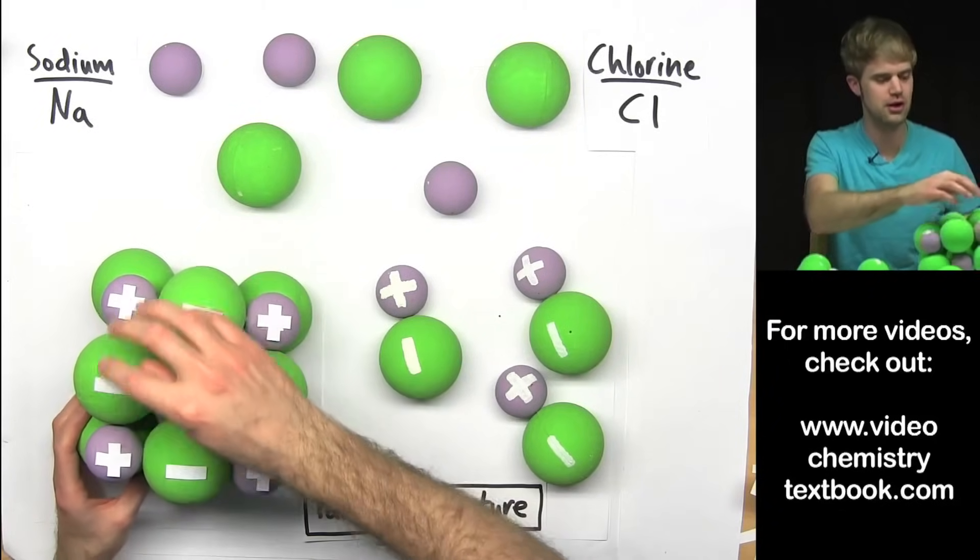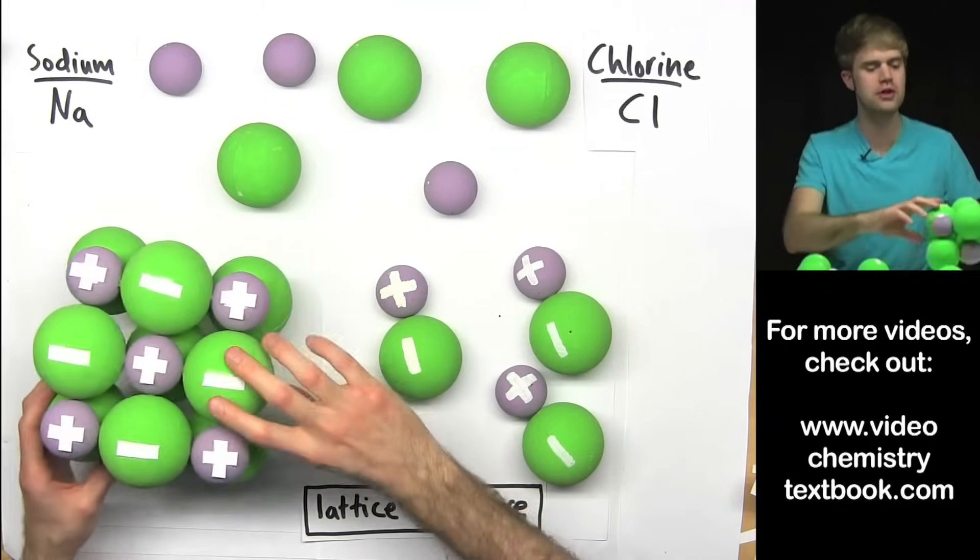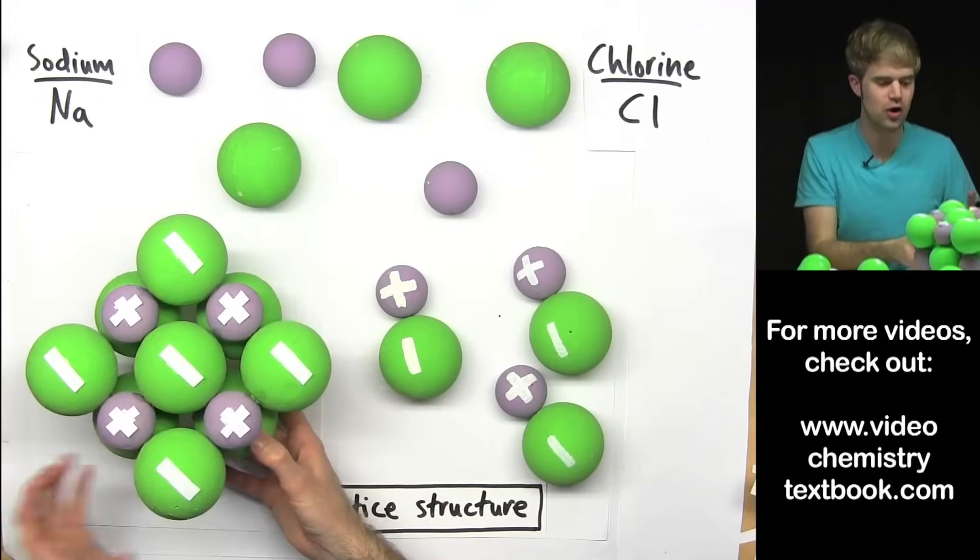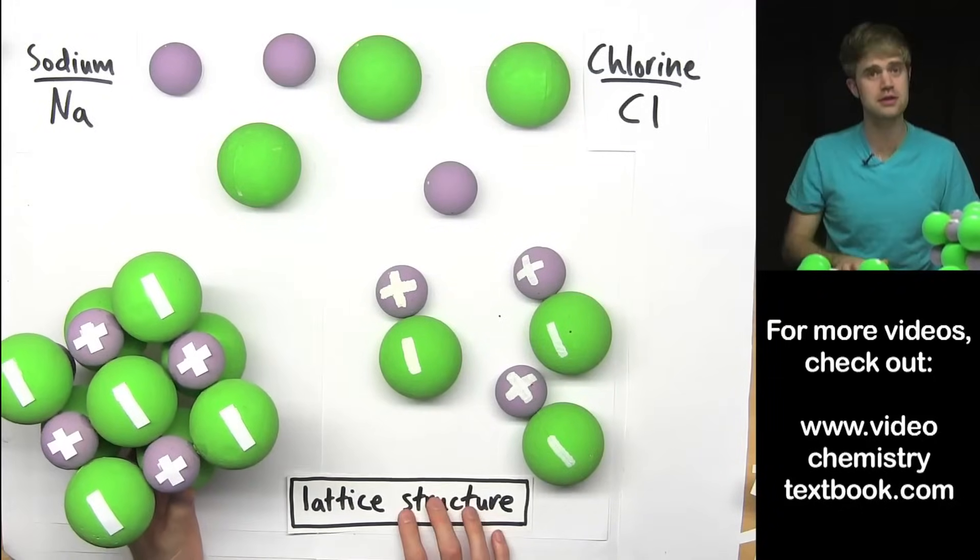Plus, minus, plus, minus, plus, minus. Because all of these opposite charges are attracting together to make this lattice structure.